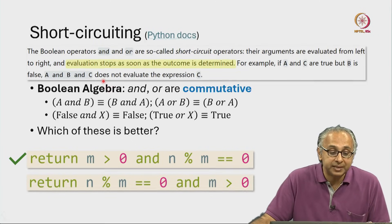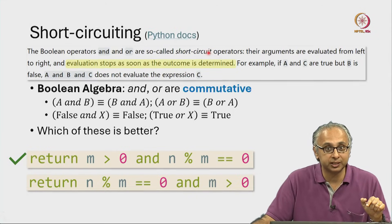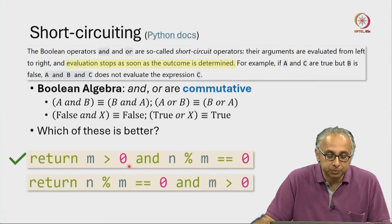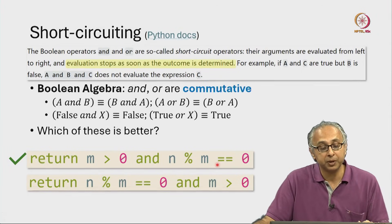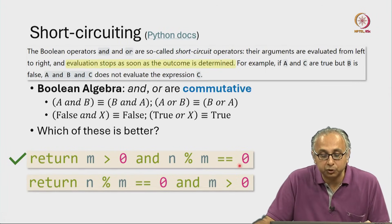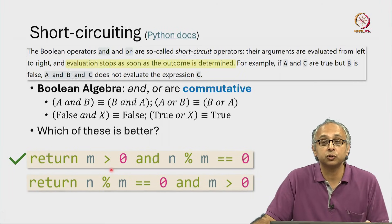So we would take advantage of short-circuiting, knowing that Python is short-circuiting the and, and this piece of code is perfectly safe. It will not divide by zero because the only way we will get to this second expression is if the first expression is true.